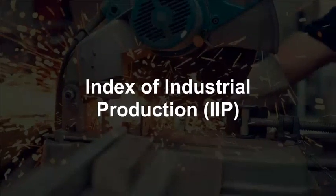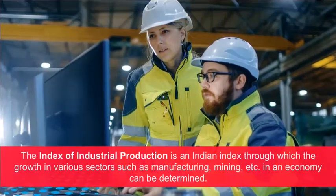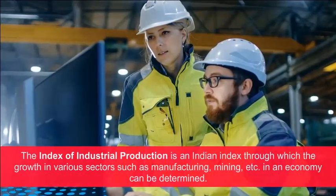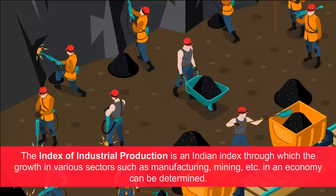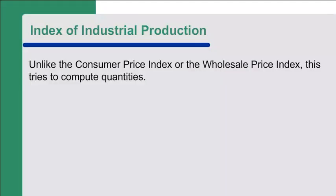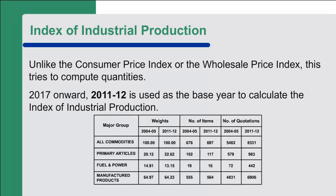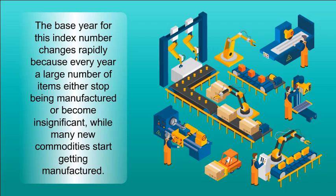Index of Industrial Production (IIP): The IIP is an Indian index through which the growth in various sectors such as manufacturing, mining, etc., in an economy can be determined. Unlike the CPI or WPI, this tries to compute quantities. From 2017 onwards, 2011-12 is used as the base year to calculate the IIP. The base year changes rapidly because every year a large number of items either stop being manufactured or become insignificant while many new commodities start getting manufactured.